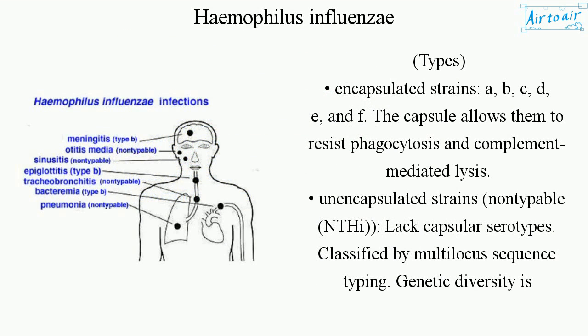Types. Encapsulated strains: A, B, C, D, E, and F. The capsule allows them to resist phagocytosis and complement-mediated lysis.